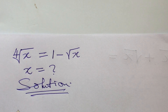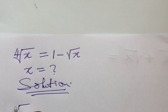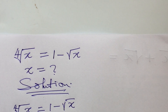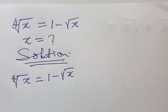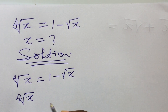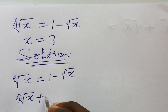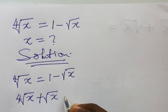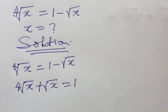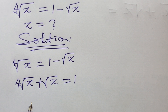Let's put down our question, which is the fourth root of x equal to 1 minus the square root of x. The first thing we're going to do is rearrange this equation. This gives us the fourth root of x plus the square root of x equal to 1.